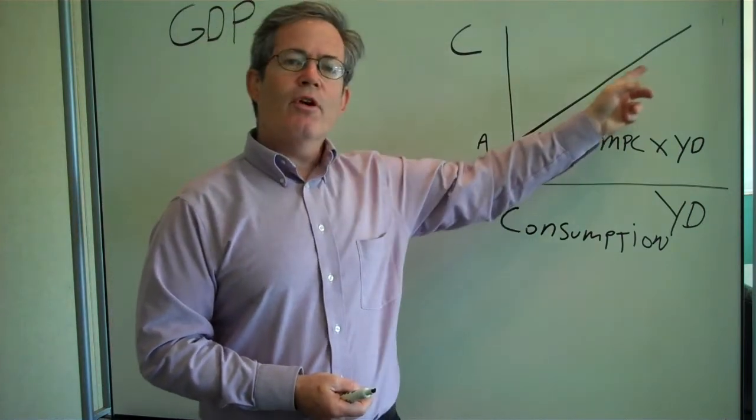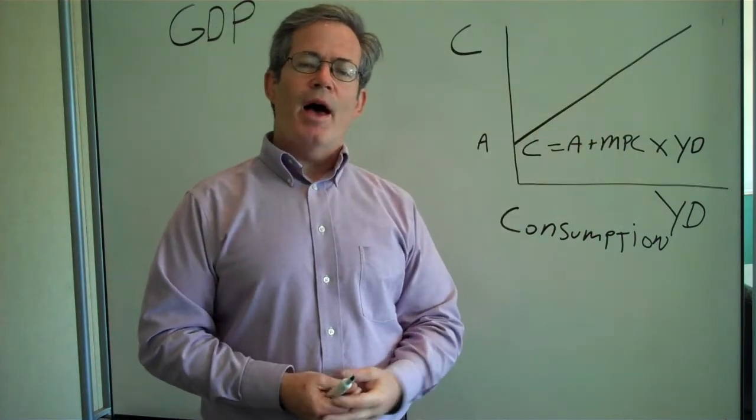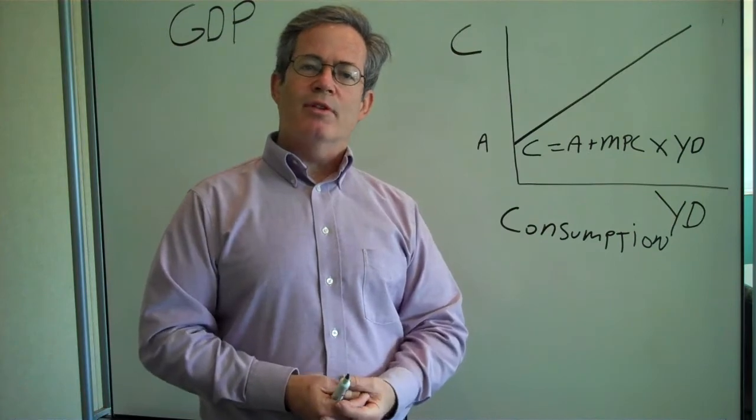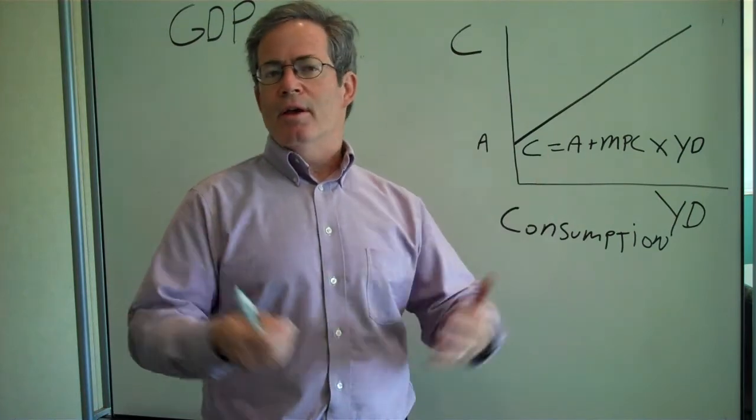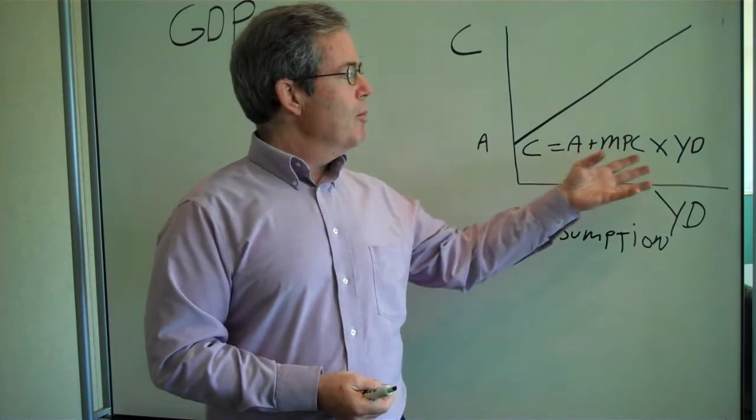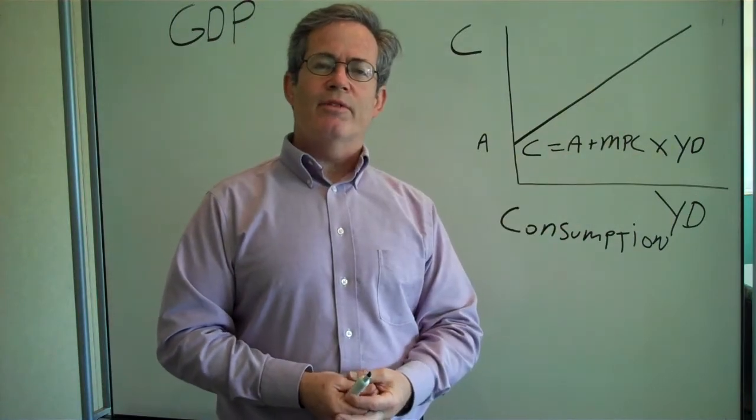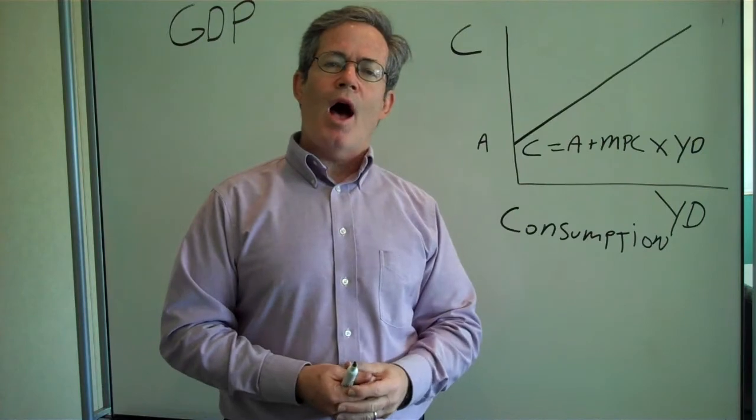That defines the slope of this curve. It's defined by how big the marginal propensity to consume is. If your marginal propensity to consume is higher, say 75%, then when income goes up and you spend 75 cents, the slope will be higher.